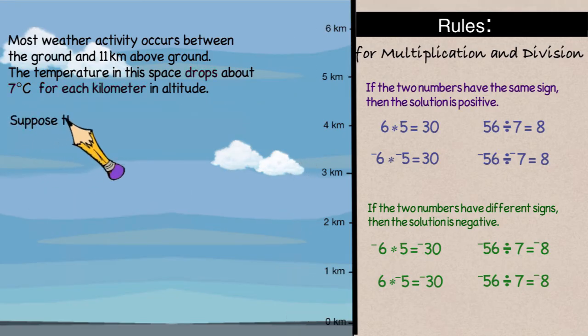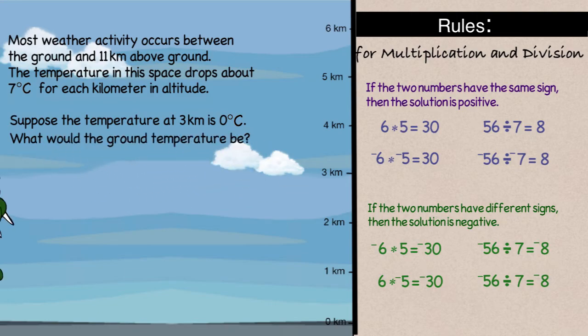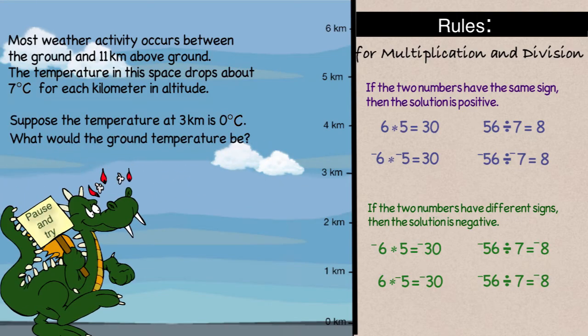Suppose we're at 3 kilometers above the surface, and the temperature is zero. What would the ground temperature be then? Again, pause the video and try to solve on your own. When you're ready, unpause, and we'll go over it together.